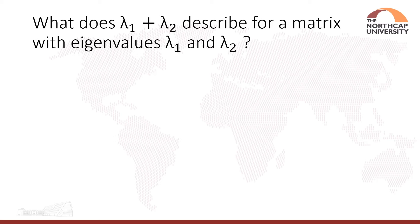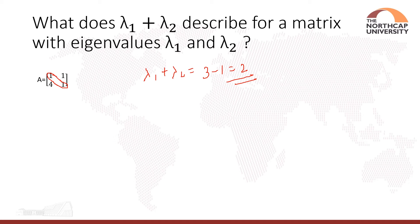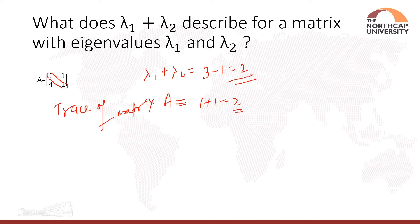The next question is: what does λ1 + λ2 describe for a matrix with eigenvalues λ1 and λ2? Using the same matrix, λ1 + λ2 = 3 + (−1) = 2. This equals the trace of the matrix — the sum of the principal diagonal elements. Since 1 + 1 = 2, the trace of the matrix equals the sum of the eigenvalues.